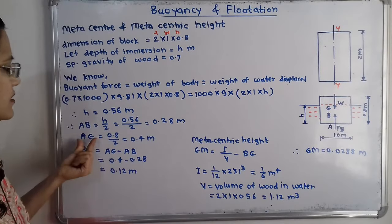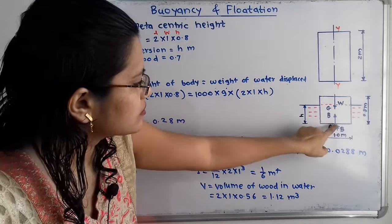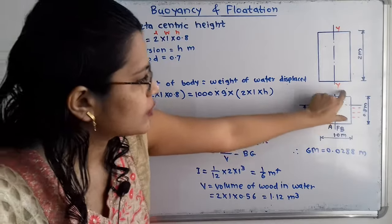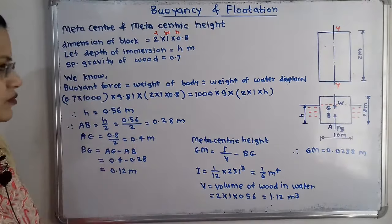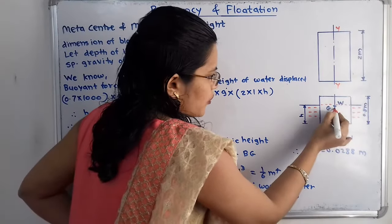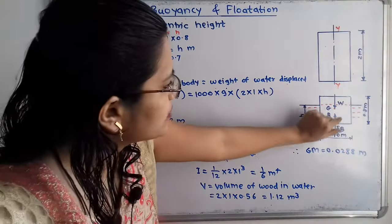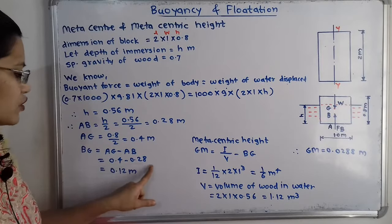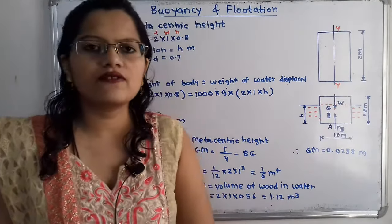The distance from A to G — the center of gravity of the whole wooden block — is total height / 2 = 0.8/2 = 0.4 m. Therefore, the distance BG = AG − AB = 0.4 − 0.28 = 0.12 m.